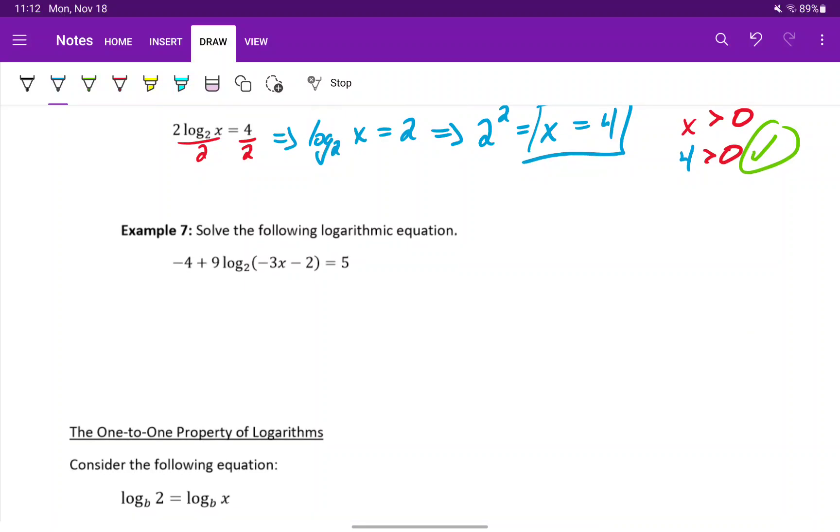In example seven, again we want to first isolate that log expression by itself. We'll do that by adding four to both sides to get nine times the log base two of negative three x minus two equals nine. Then we'll divide both sides by nine to get the log base two of negative three x minus two equals one.